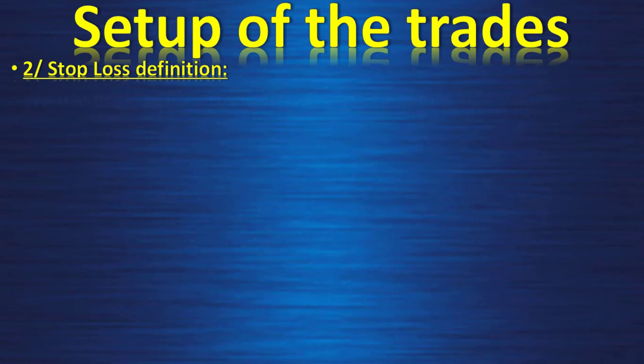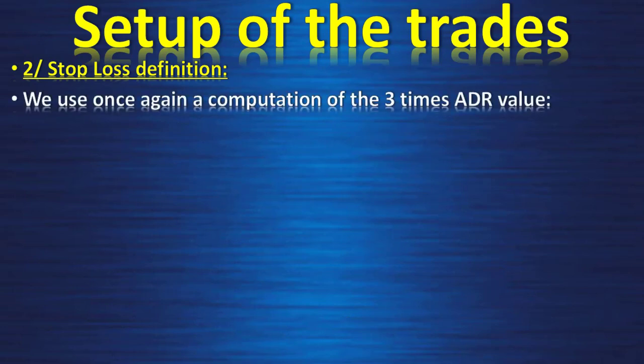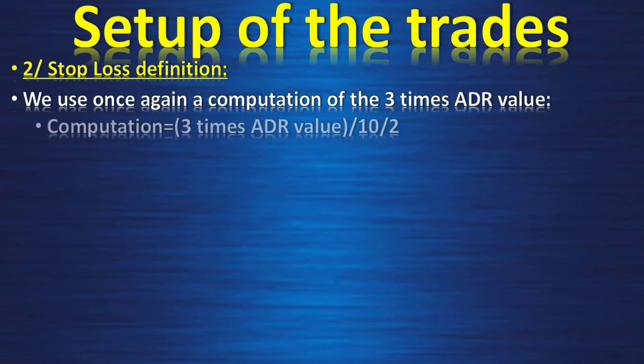For stop-loss definition, we use a computation of the 3 times ADR value. The computation equals: 3 times the ADR value, divided by 10, and divided by 2, to get a shorter stop-loss. The good thing with the ADR is it will adapt to the volatility of the specific pair, which is very good for us.